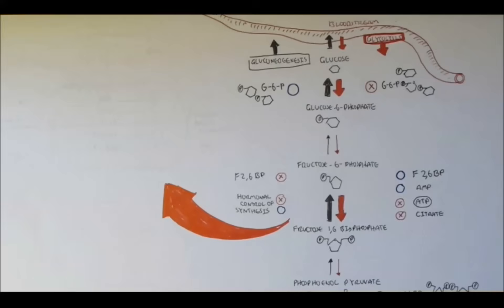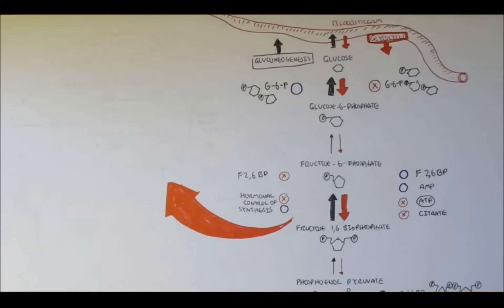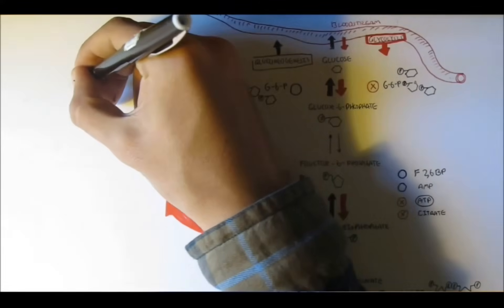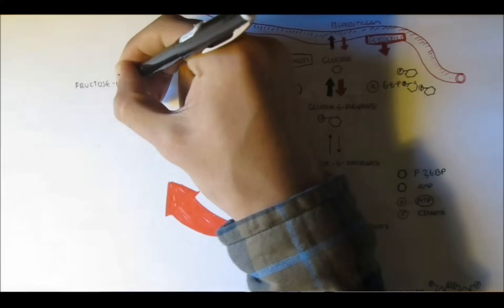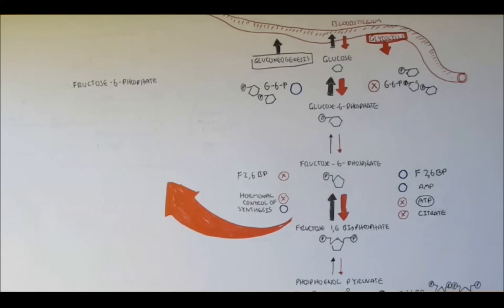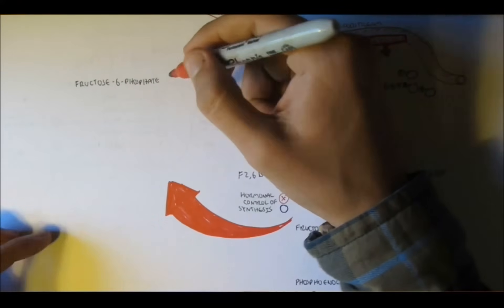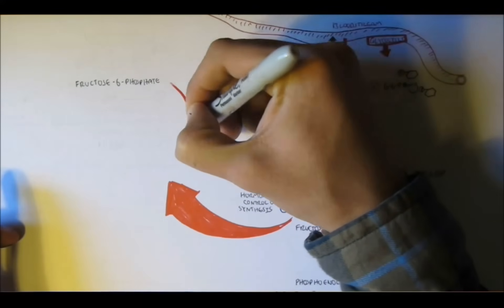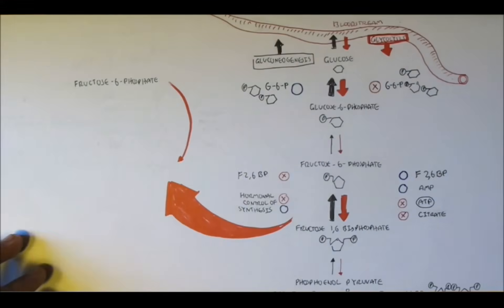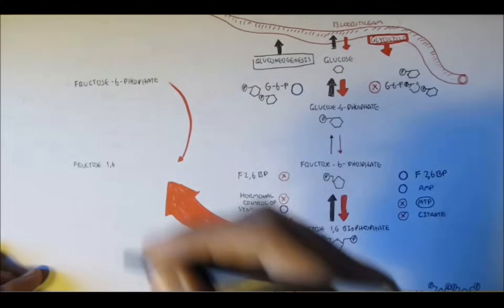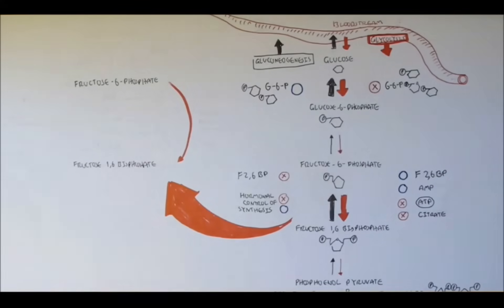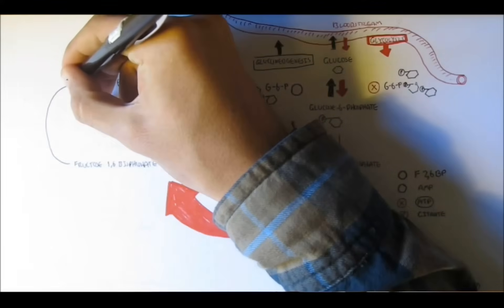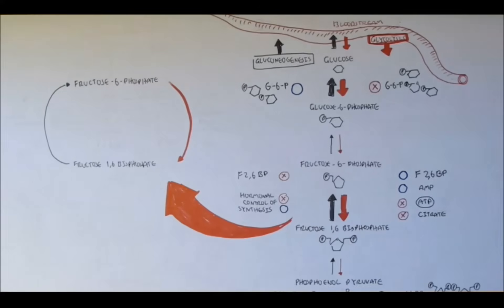This video is going to carry on from the last video, which concentrated on the regulation of glycolysis and gluconeogenesis, concentrating on the specific second pathway between fructose 6-phosphate and fructose 1,6-bisphosphate. So as we know, fructose 6-phosphate converts to fructose 1,6-bisphosphate in glycolysis, and fructose 1,6-bisphosphate converts to fructose 6-phosphate in gluconeogenesis.